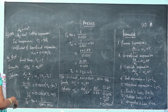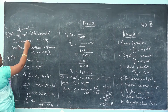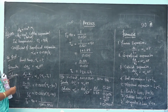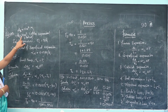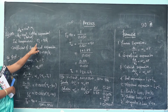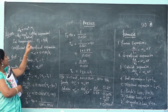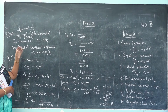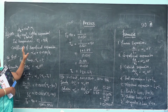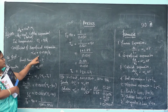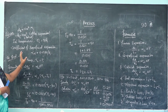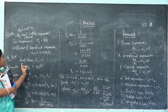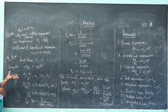The given values are: initial area A1 = 10 square meters, final area A2 = 11 square meters, initial temperature T1 = 90 Kelvin, and the coefficient of superficial expansion alpha-A = 0.021 per Kelvin. We need to find the final temperature T2.